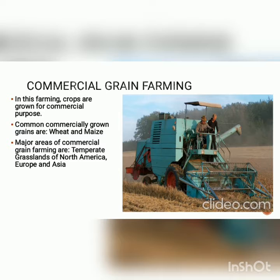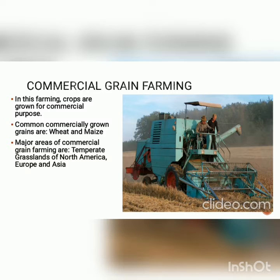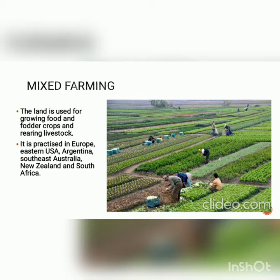In commercial grain farming, crops are grown for commercial purpose. The common commercial grains grown are wheat and maize. The major areas of commercial grain farming are the temperate grasslands of North America, Europe, and Asia.